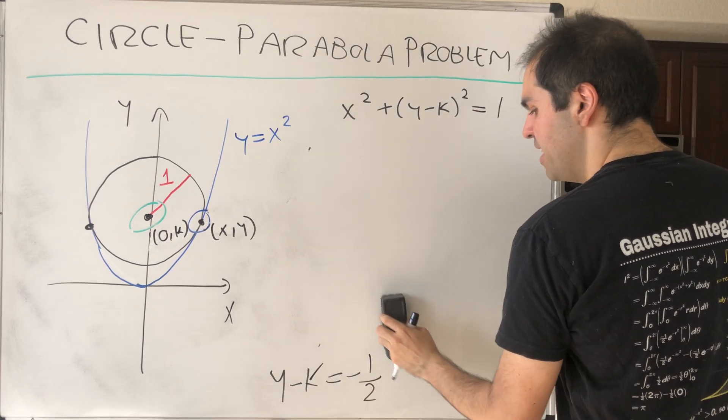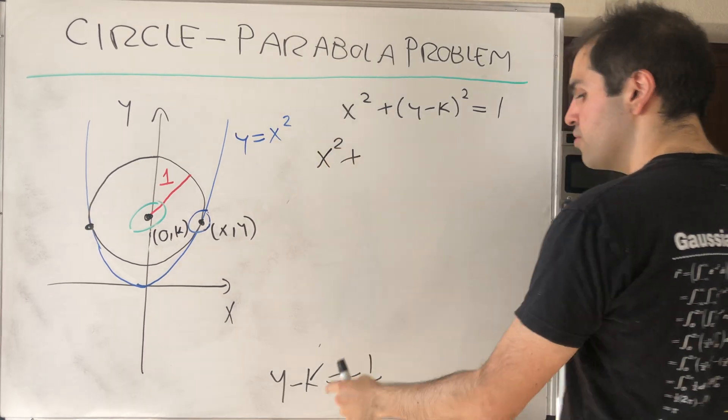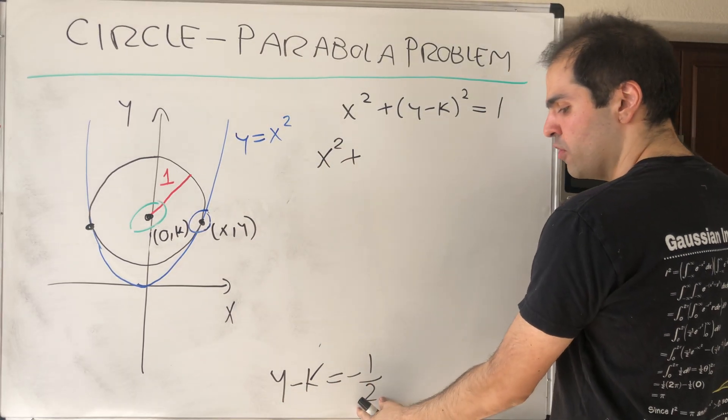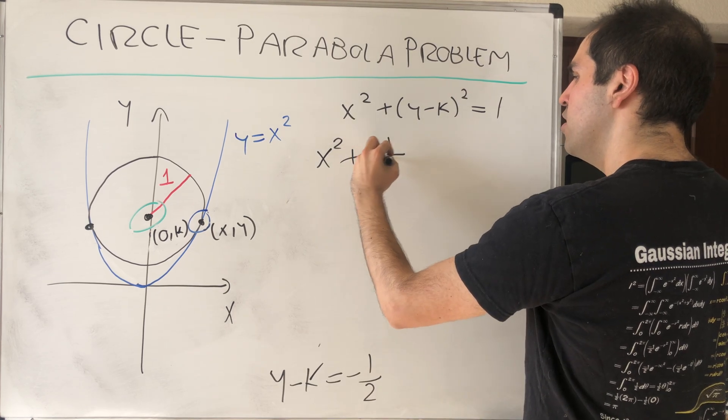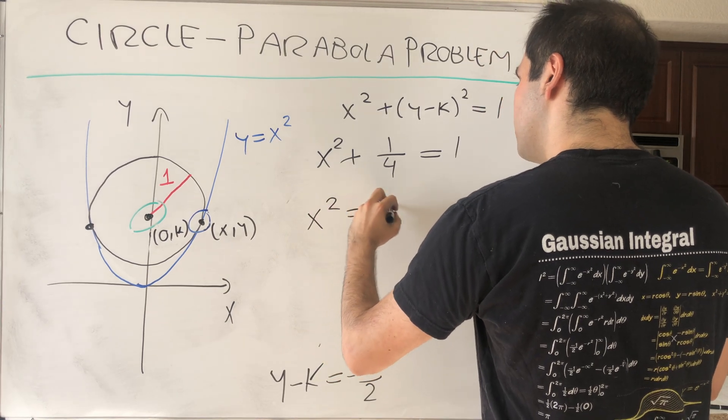And what we basically get is x² + (y - k)², so (-1/2)², which is 1/4, equals 1. So x² equals 3/4.